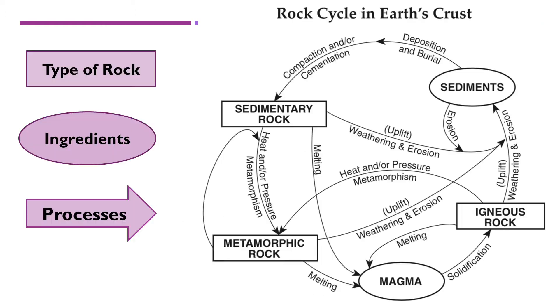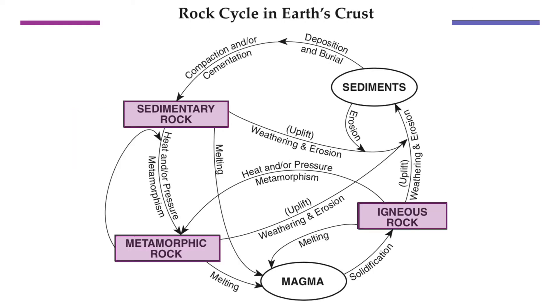Anything in a rectangle is a type of rock. Anything in an ellipse is an ingredient used to make the rock. Anything with an arrow is a process used to form that rock. Let's start with the types of rocks.